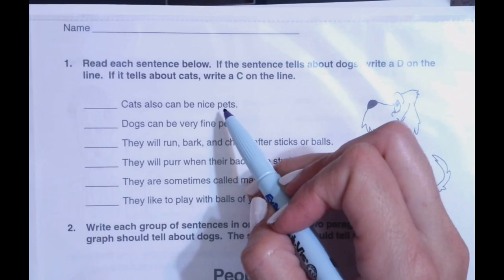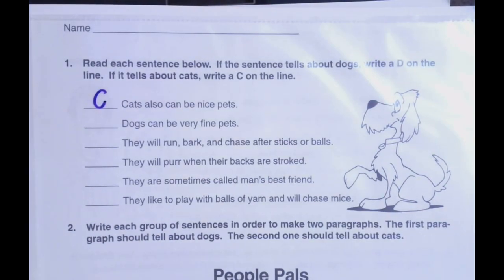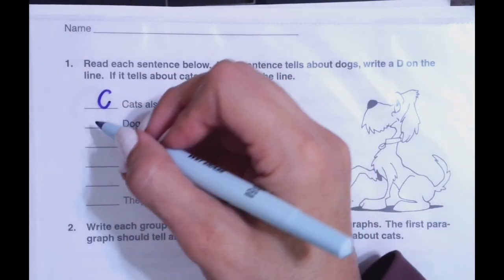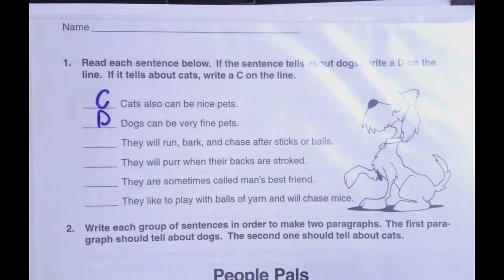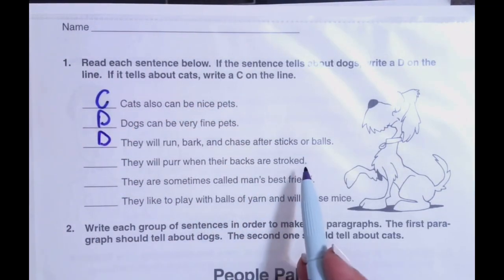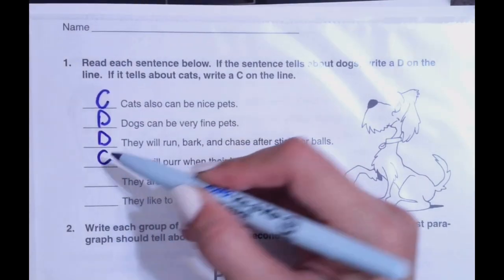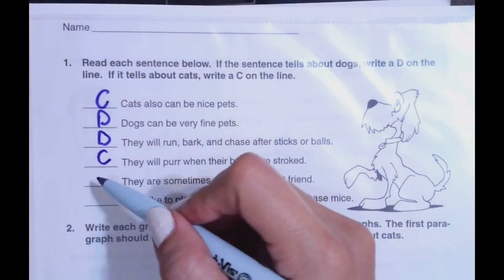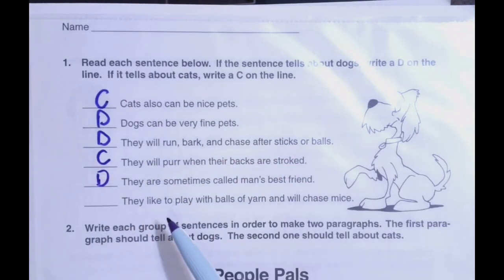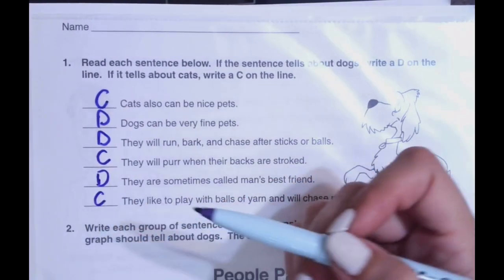Cats also can be nice pets — C for cats. Dogs can be very fine pets. They will run, bark, and chase after sticks or balls — it's about a dog. They will purr when their backs are stroked — this is about a cat. They are sometimes called man's best friend — this is about dogs. They like to play with balls of yarn and will chase mice — and this is describing cats.